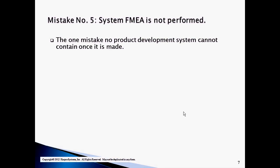The fifth mistake companies make is not performing a system FMEA. The major objective of the system FMEA is to identify improperly defined design requirements. An improperly defined design requirement is the one mistake that cannot be contained using product testing, either during the design phase or after the product is produced, since the acceptance criteria for testing is based on the design requirement. If you get the design requirements wrong, nothing else matters.